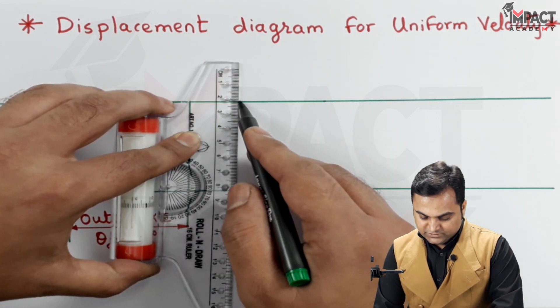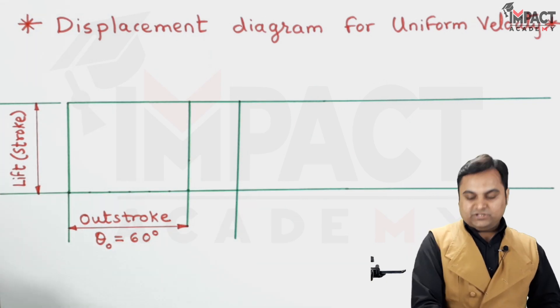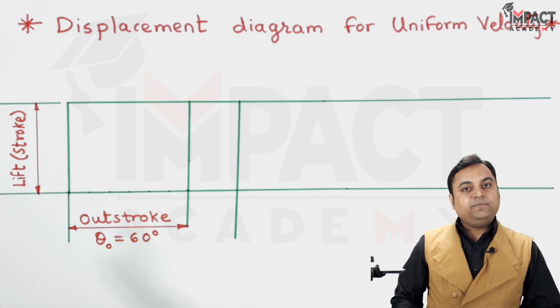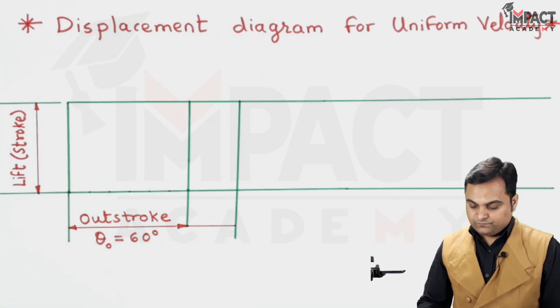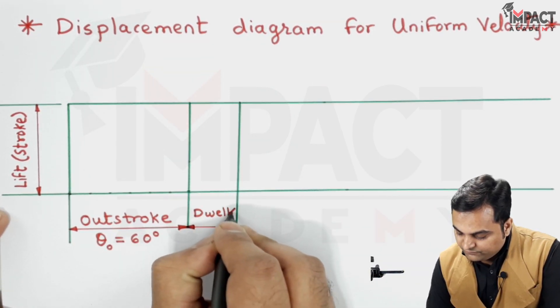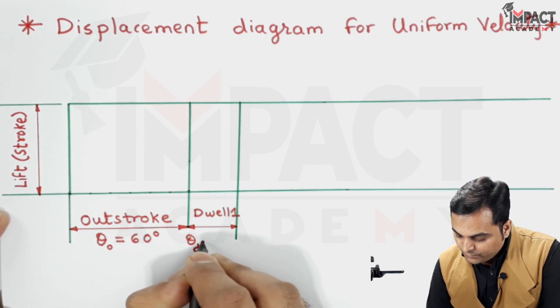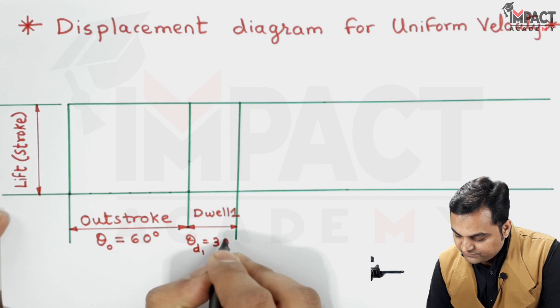And for dwell there is no need to divide it because the cam or here the follower remains at the same position. So this is the first dwell, theta d1. My assumption is that it is 30 degrees.